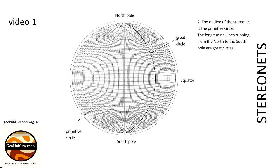The longitudinal lines running from north to south pole are great circles. These lines give positions east or west of the north-south line on the StereoNet.